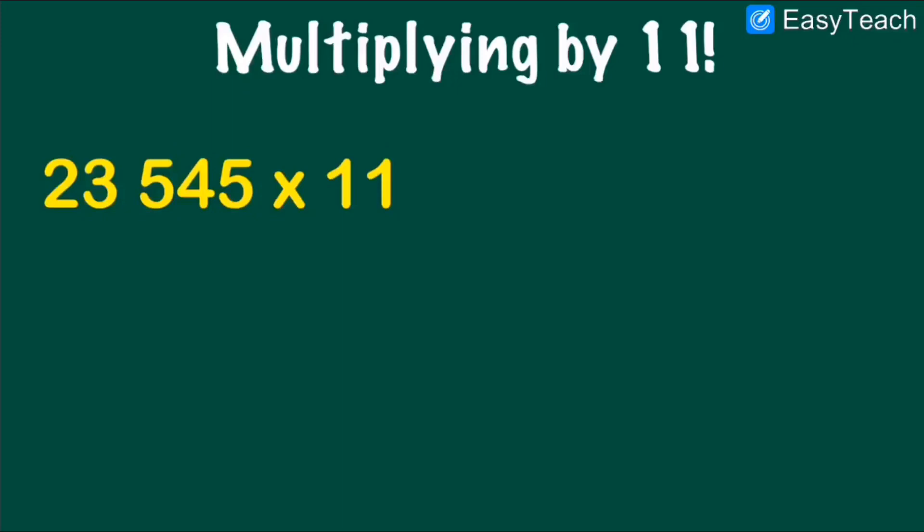Example number 1, we have 23,545 times 11. So I need to copy the number first. 23,545 multiplied by 11.